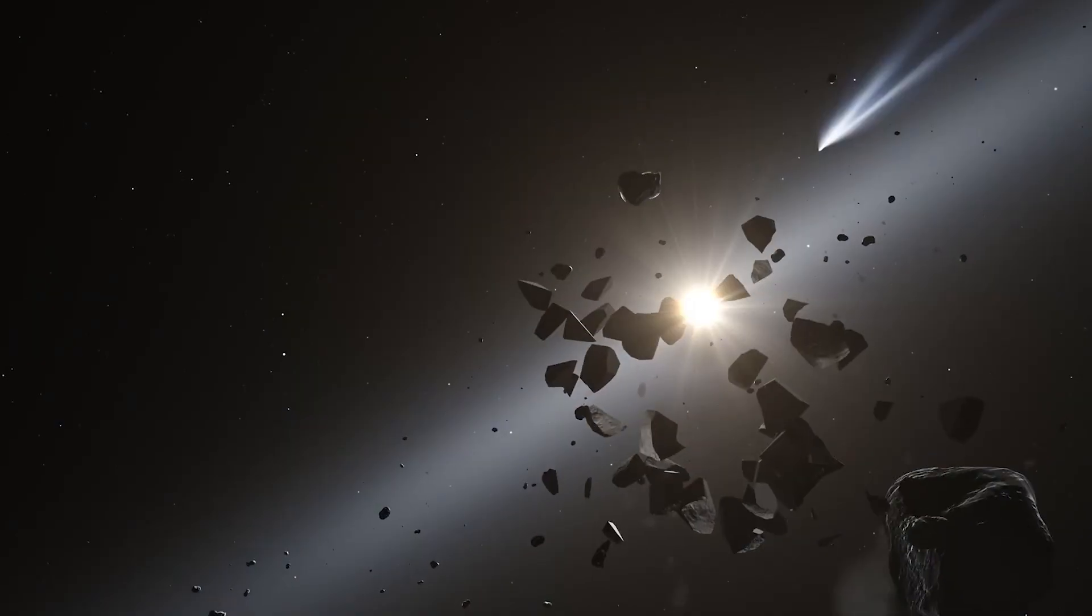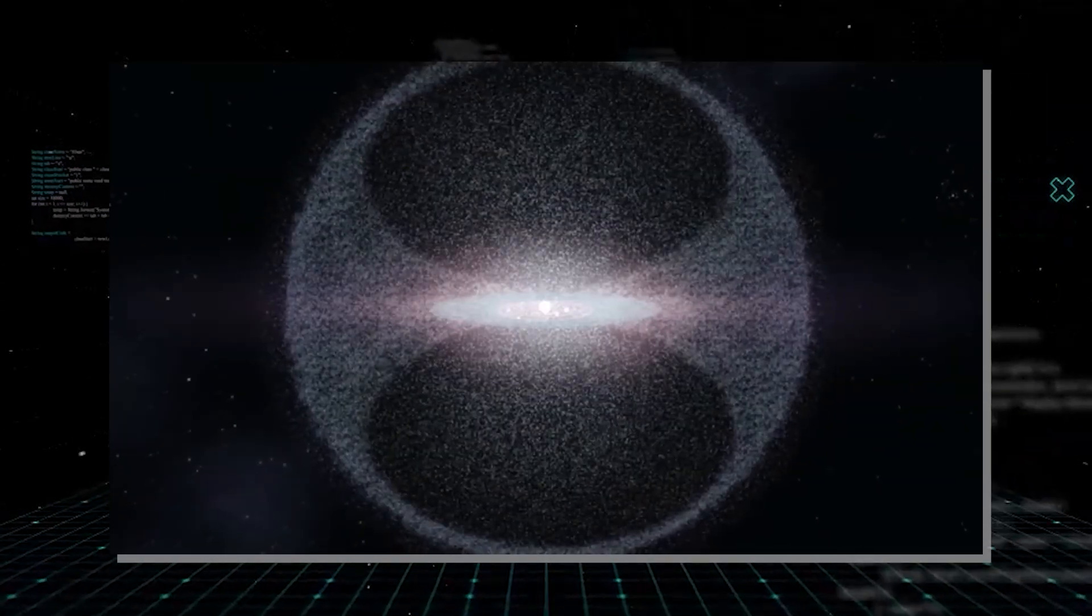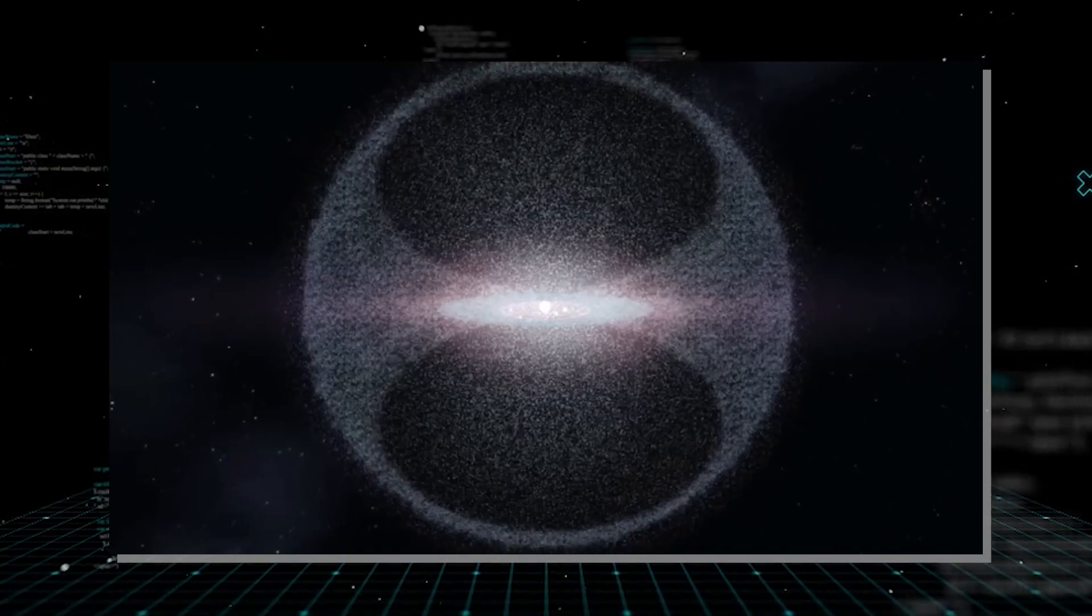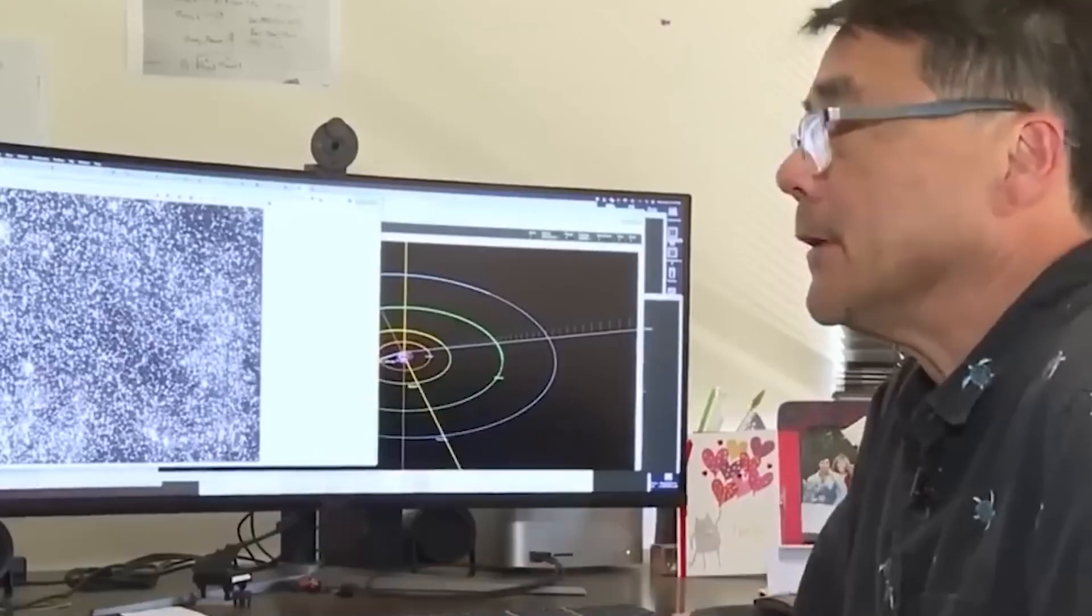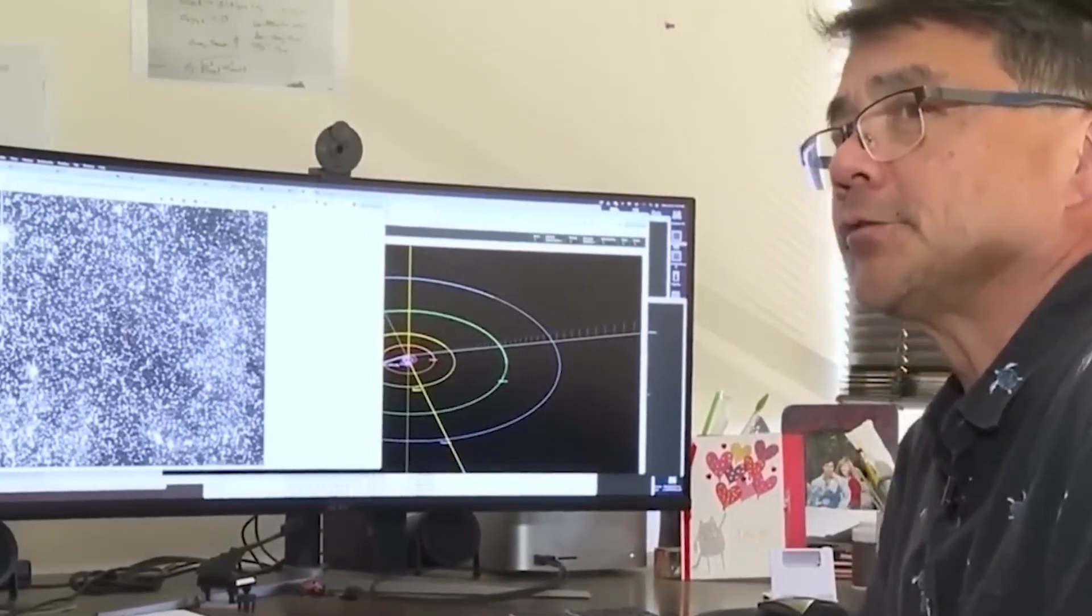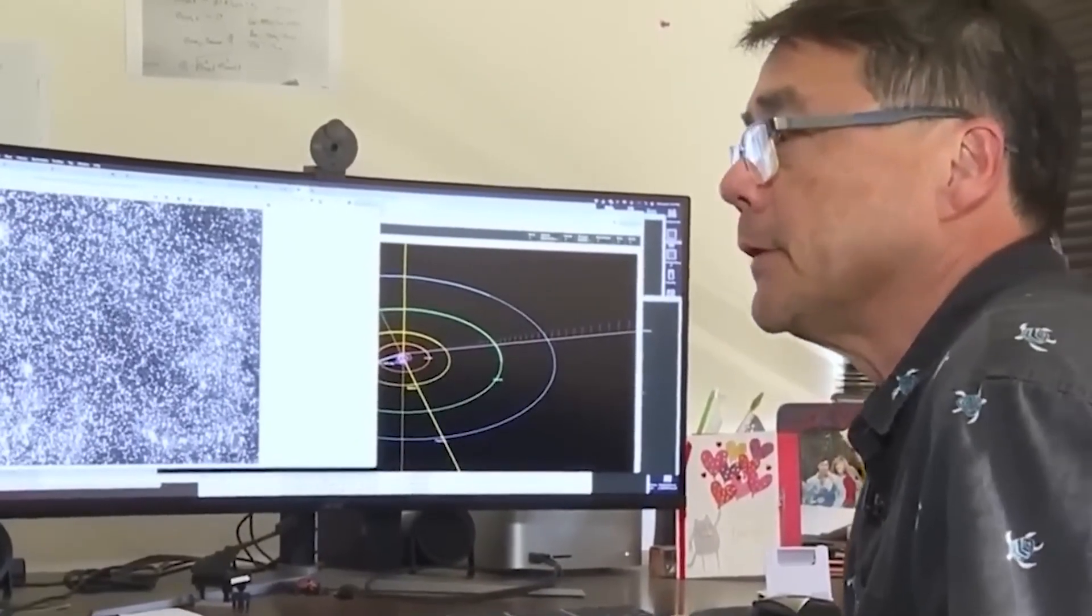This is vastly different from the elliptical orbits of planets, or even most comets, which typically originate from the Oort cloud, the vast shell of icy objects at the outermost reaches of our solar system, and follow more predictable paths. An object with an eccentricity of over 6 is an anomaly, a cosmic rogue that behaves in ways we are not accustomed to predicting.